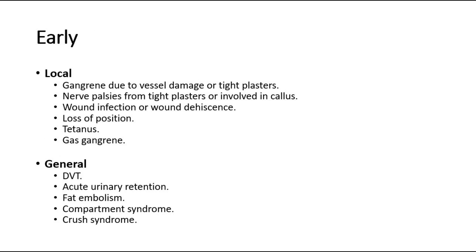The second group are early complications, which can be further divided into local and general complications. Local complications include gangrene due to vessel damage or tight plasters, nerve palsies from tight plasters or involvement in callus, wound infection or wound dehiscence, loss of position, tetanus, and gas gangrene.